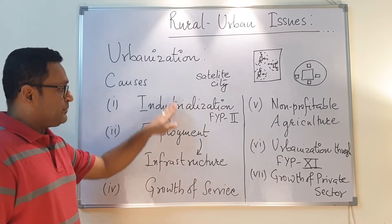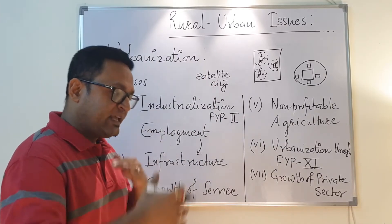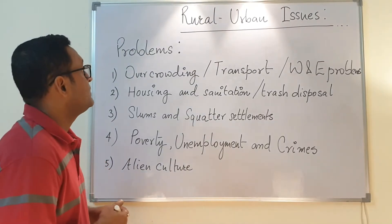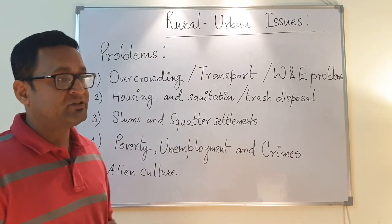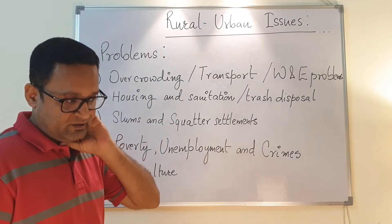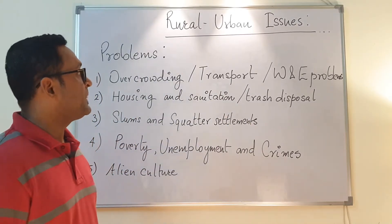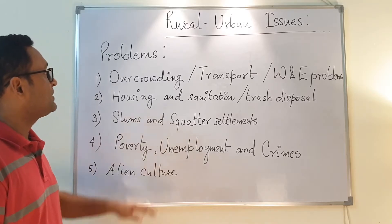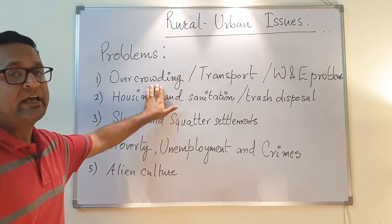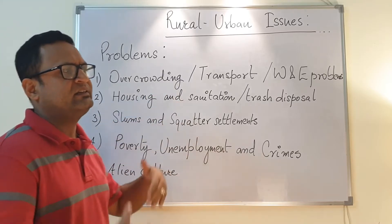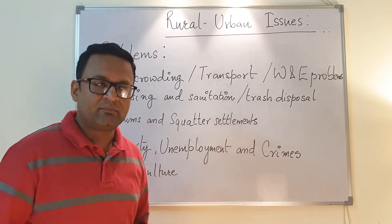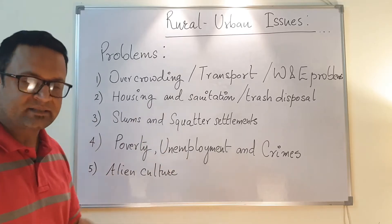These are the basic causes for rapid urbanization in our country. Moving to the second part of the lecture — the problems of urbanization. If we broadly categorize them, the first problem an urban settlement faces is overcrowding. When a lot of people migrate from rural parts and move toward an urban settlement, there will naturally be overcrowding.